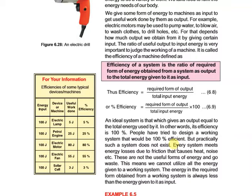The 100% efficient system is the ideal system. We call it ideal, but it is not possible in practical life. These are theoretical concepts — in practical life, no machine is ever 100% efficient, and there is always some energy loss.